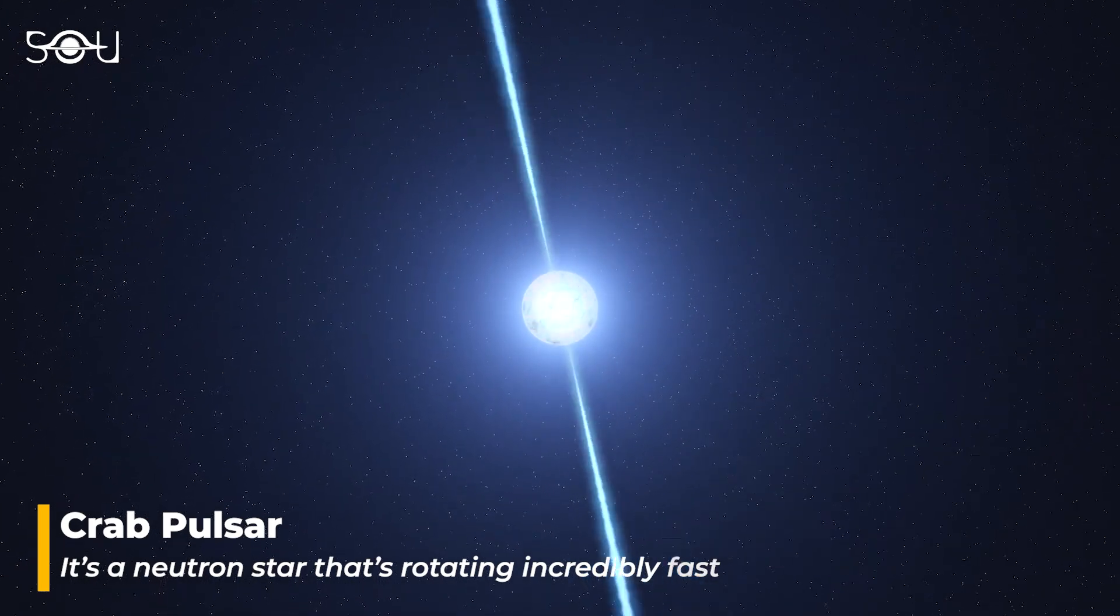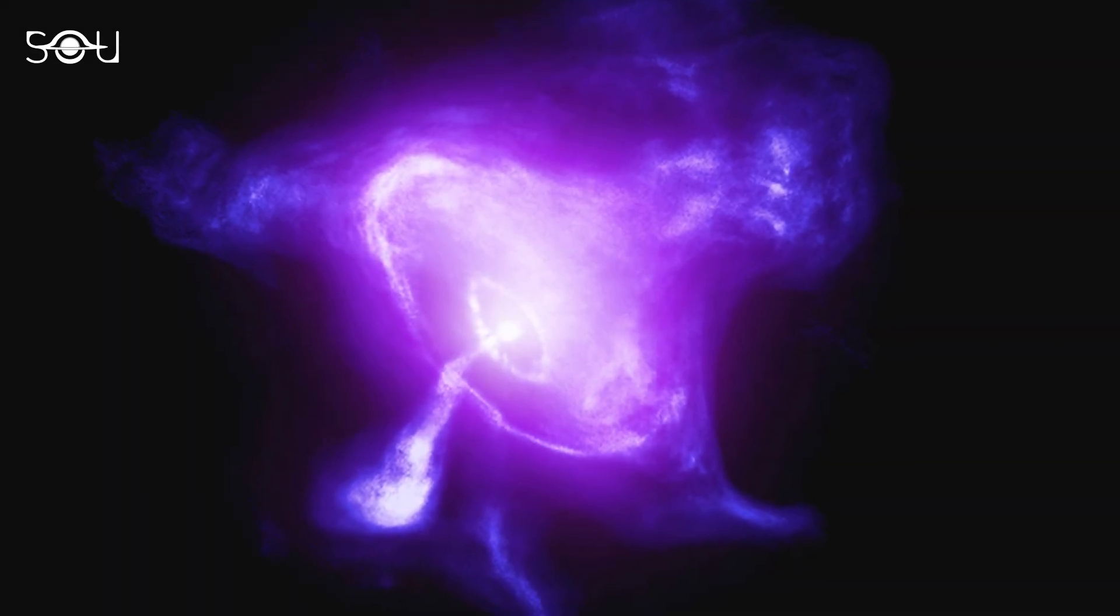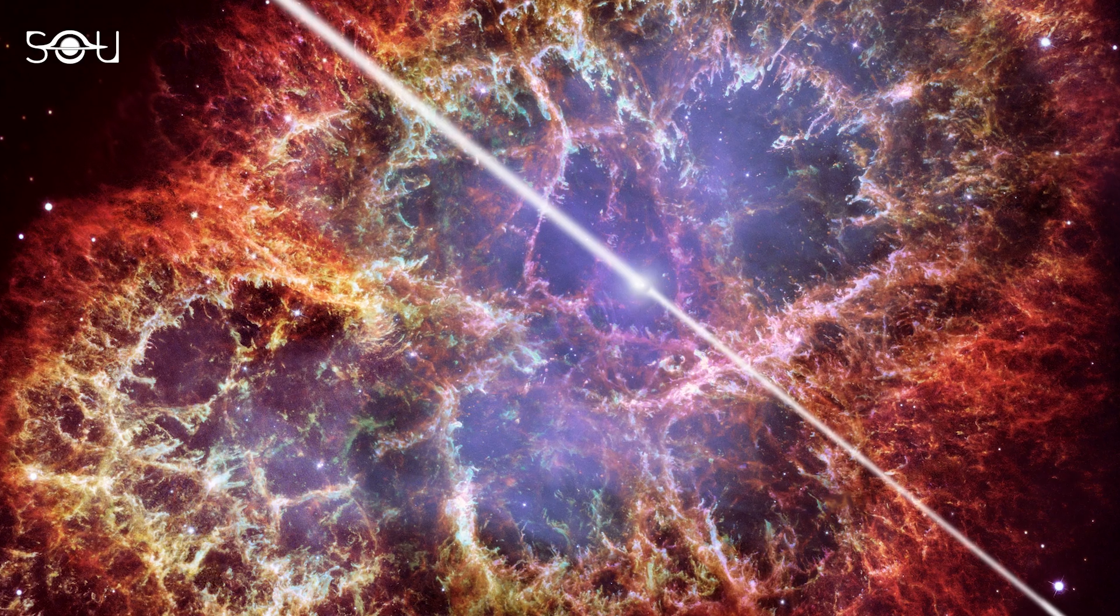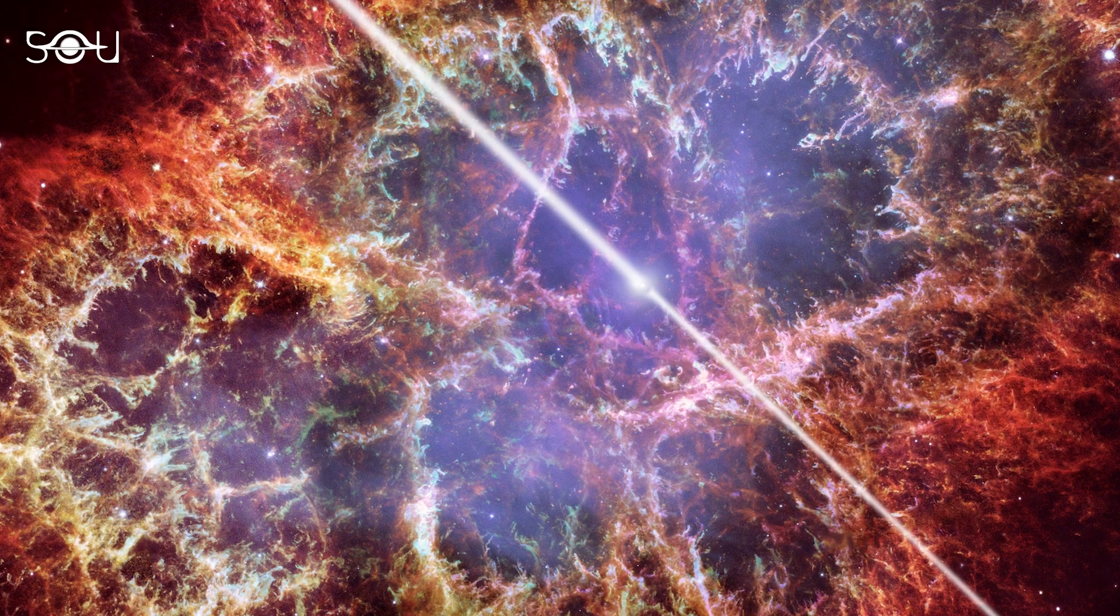This pulsar can emit radiation across the broad spectrum, ranging from gamma rays to radio waves. Remarkably, at energies exceeding 30 kiloelectron volts, it stands as the brightest continuous gamma-ray source in the sky.